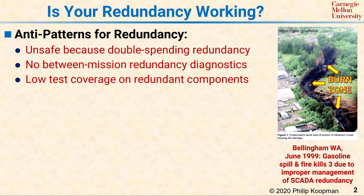The online controller became non-responsive during a pressure surge, and by the time the backup controller could be brought online, it was too late and the pipeline ruptured.